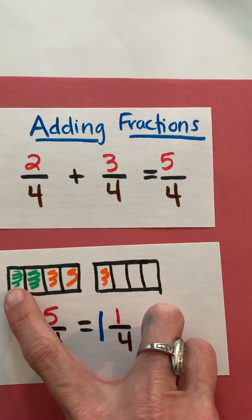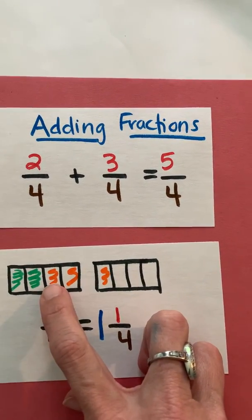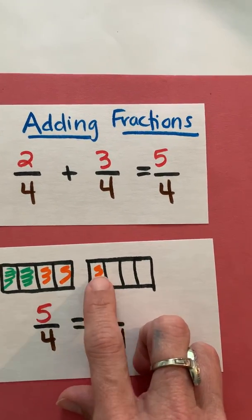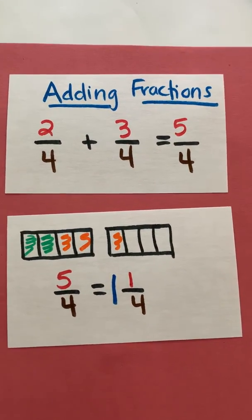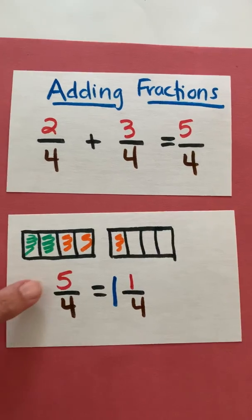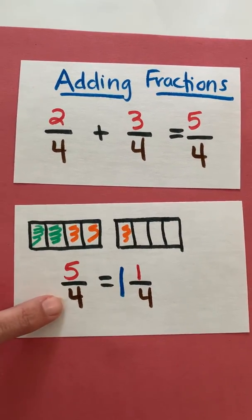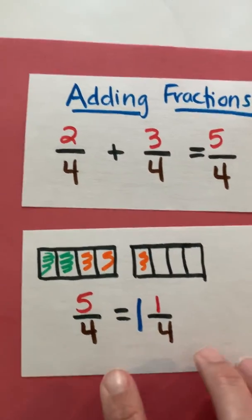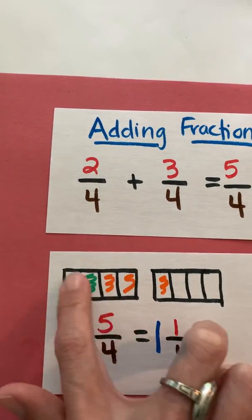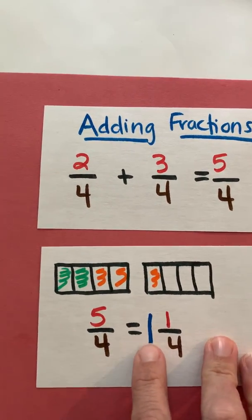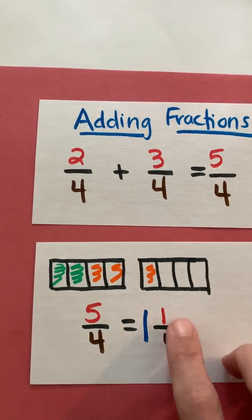So then when I add that together, that's one-fourth, two-fourths, three-fourths, four-fourths, five-fourths. I cannot leave final answers in improper fraction. This is improper because the numerator is larger than the denominator, and so I think to myself, how many groups of four-fourths can I get out of five-fourths? I can get one whole group, which gives me a whole number of one, and I have one-fourth left over.